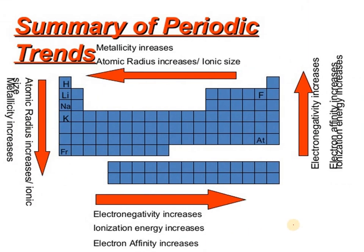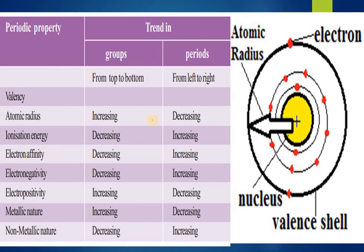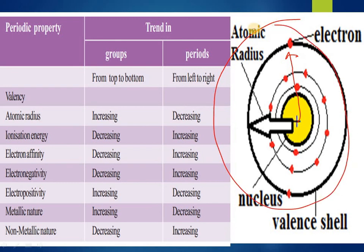In summary: metallic character increases toward the bottom-left, atomic radii increases downward and to the left, ionic size follows similarly, while electronegativity, ionization energy, and electron affinity all increase toward the top-right of the periodic table. When atomic size decreases, the nucleus attracts electrons more strongly, making ionization enthalpy higher. When atomic size increases, the electron is farther from the nucleus and easier to remove, requiring lesser energy.